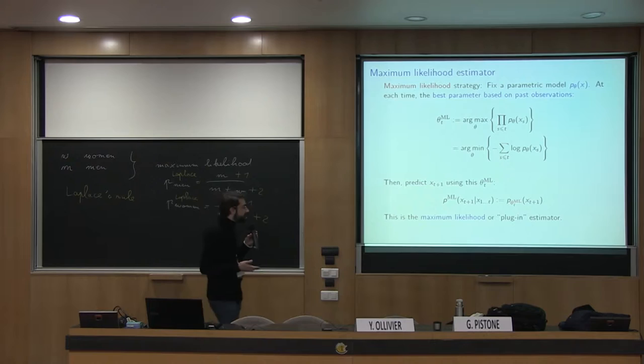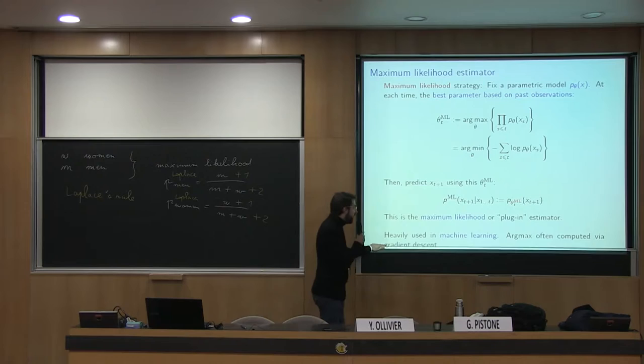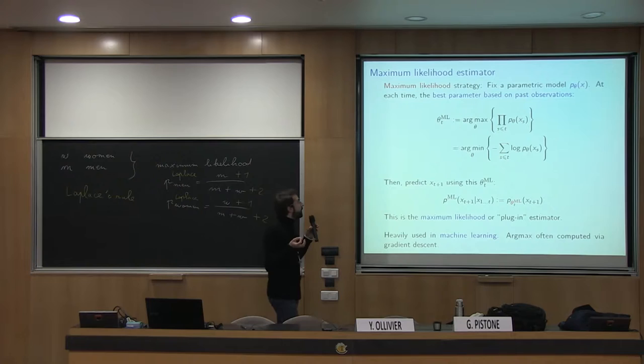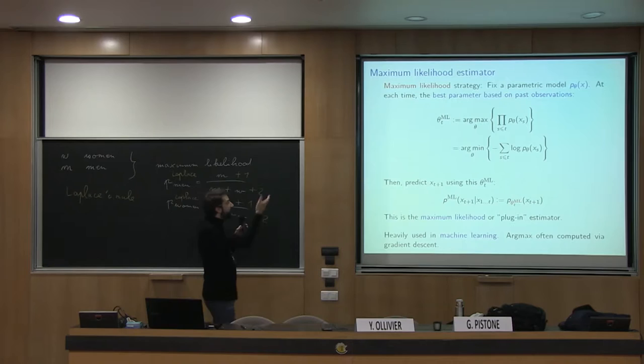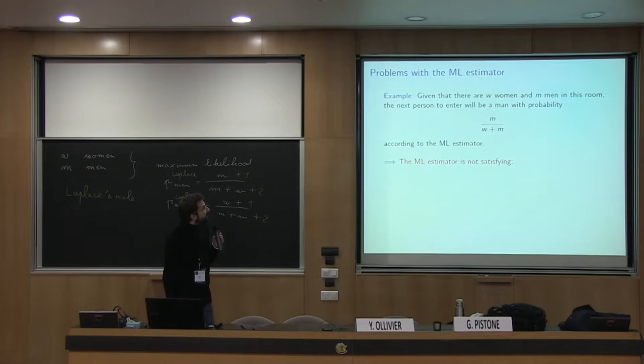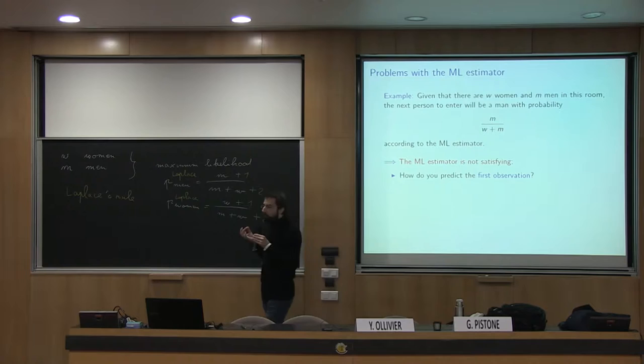This is used a lot in machine learning, especially when you have a complex model p_theta involving many parameters. Usually you compute the argmax or argmin by gradient descent over the space of parameters. But there are problems even in the simplest examples with this estimator: if you estimate the proportion of men in a conference as M over W plus M, how do you predict the first observation when you have zero over zero — that's undefined. That's a first problem, but not a big problem in practice.